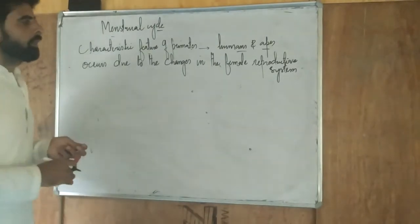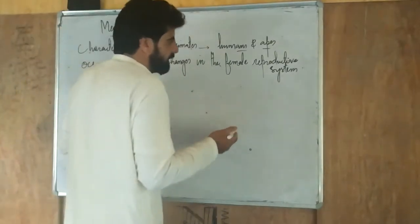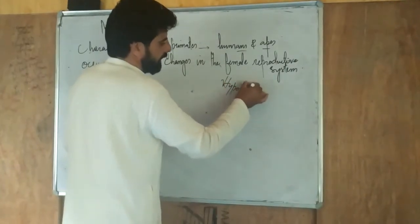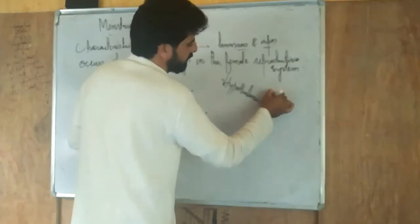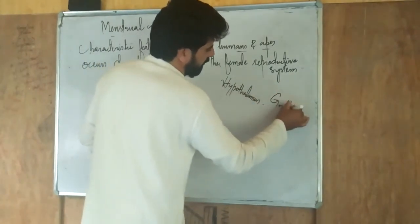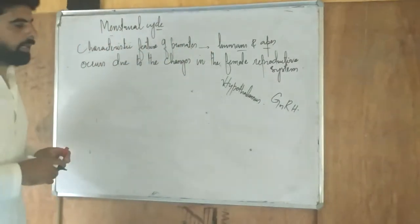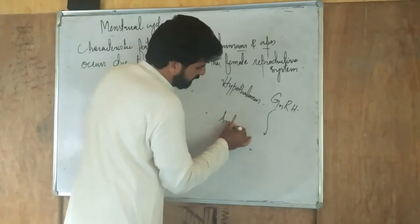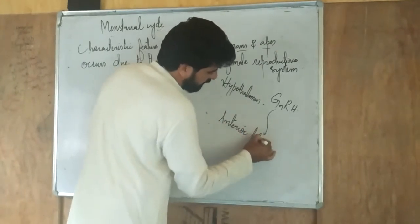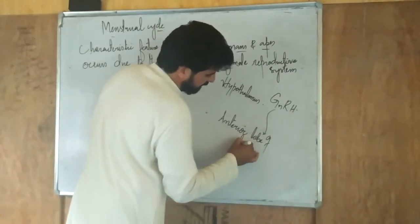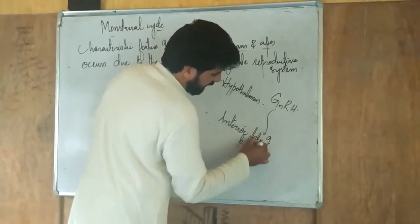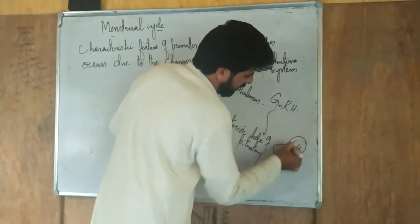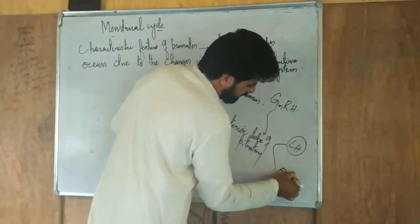At puberty, when a girl child attains the age of puberty, the hypothalamus secretes a hormone known as gonadotropin releasing hormone, or GnRH. This gonadotropin releasing hormone activates the anterior lobe of the pituitary gland, which then creates two hormones: luteinizing hormone and follicle stimulating hormone.